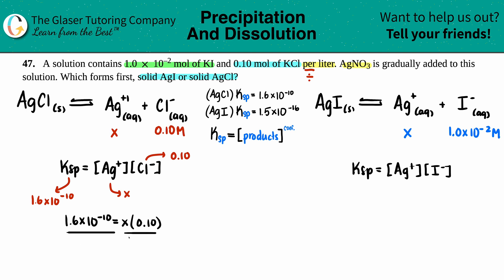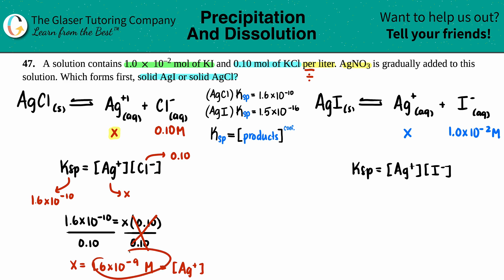Dividing both sides by 0.10: x = 1.6×10⁻¹⁰ ÷ 0.1 = 1.6×10⁻⁹ M. Keep in mind this is the molarity for Ag⁺, since that's what we set as x. This can also be viewed as the molar solubility of AgCl — it only takes 1.6×10⁻⁹ M of Ag⁺ to start forming a precipitate. Molar solubility of AgCl = 1.6×10⁻⁹ M.